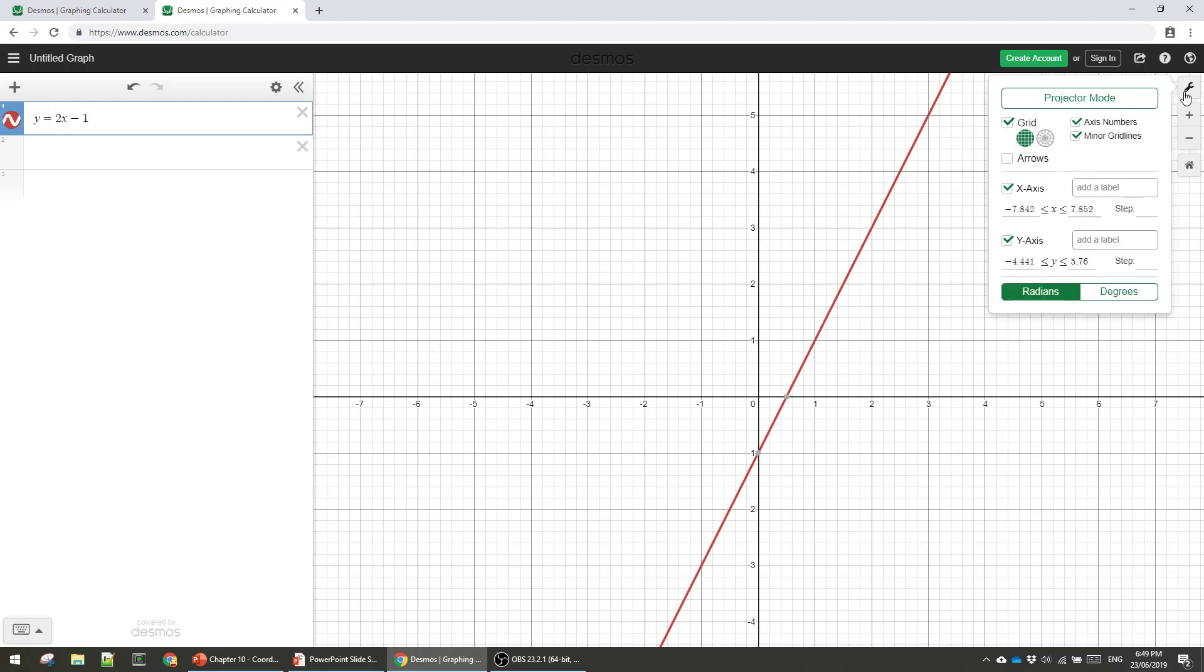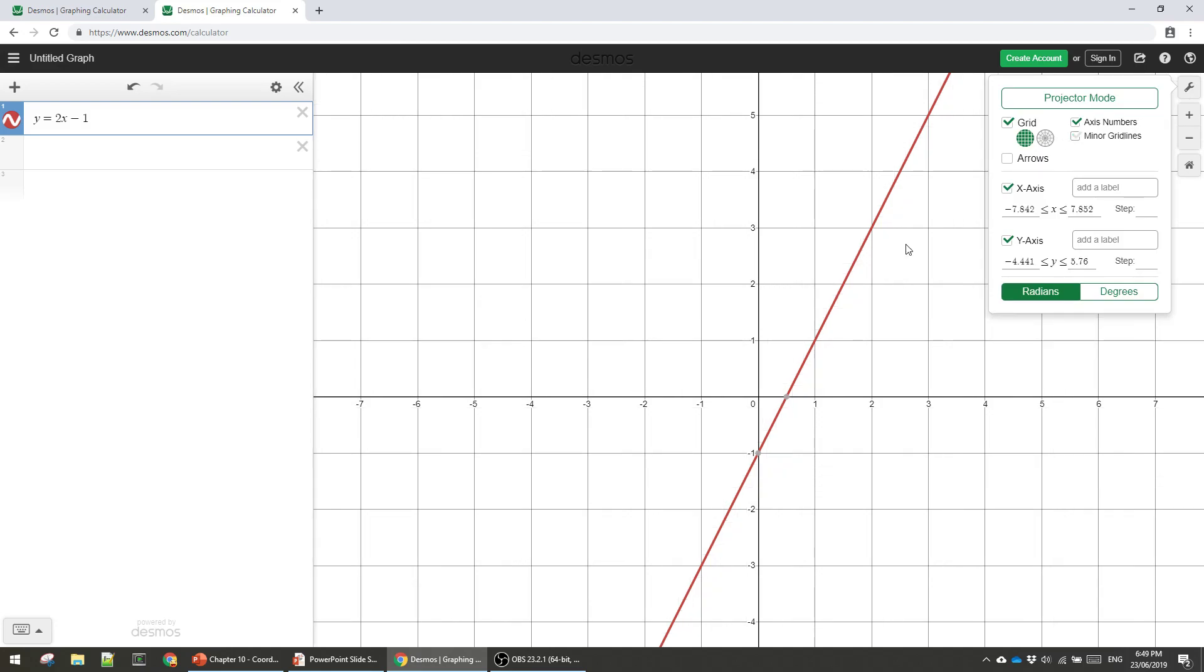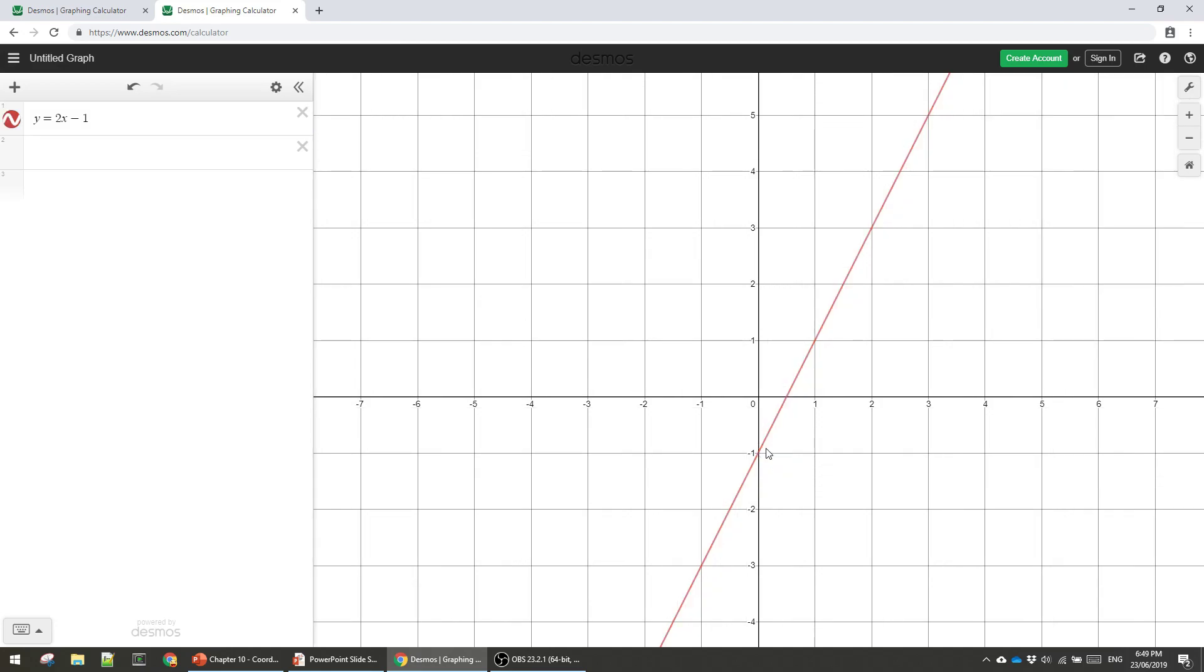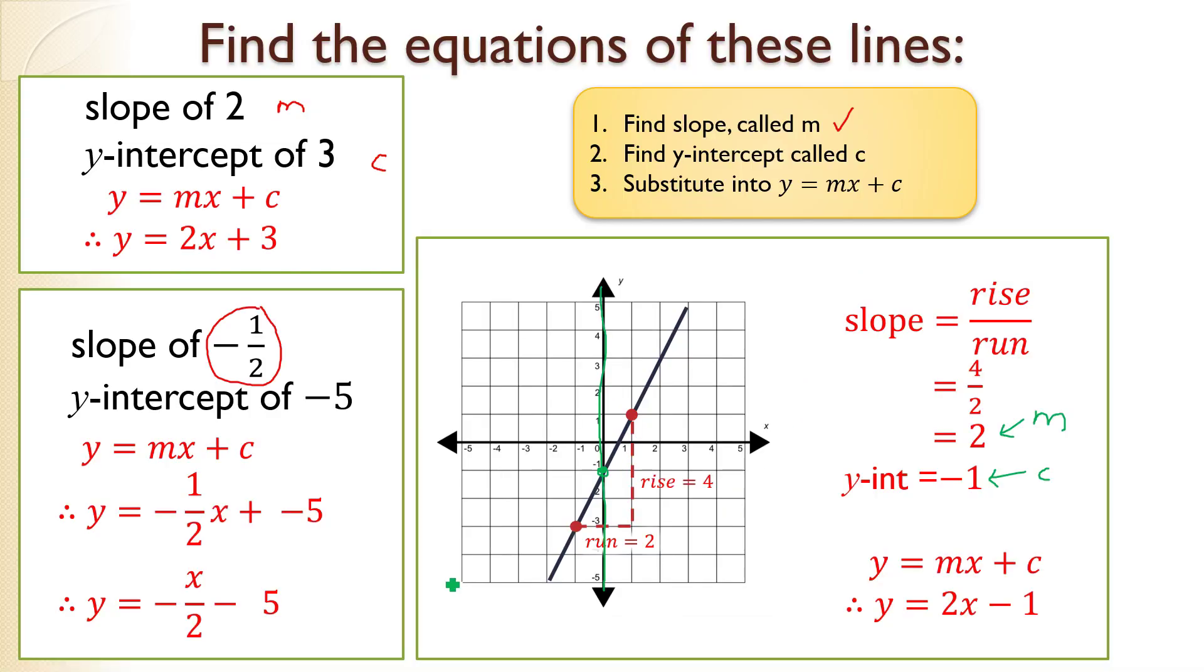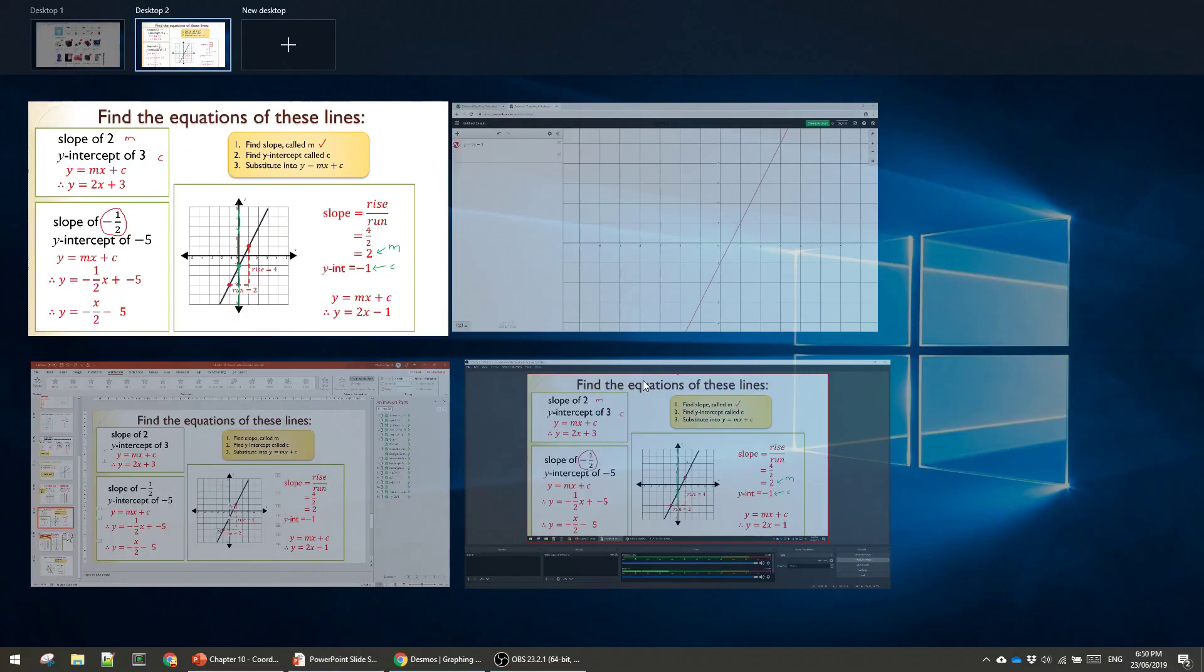To make it easier to see, I'm going to turn off these little minor grid lines, these faint ones. So there we go. It looks like that, crosses at negative one. And sure enough, that is exactly what I was expecting. Brilliant. So we got it right.